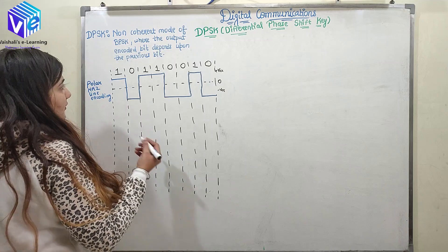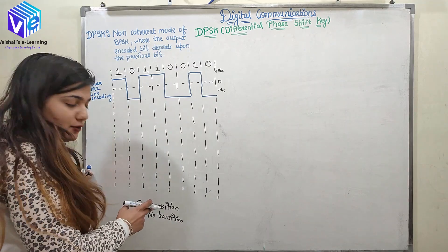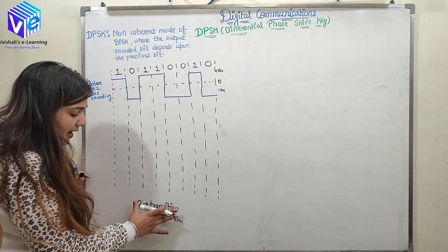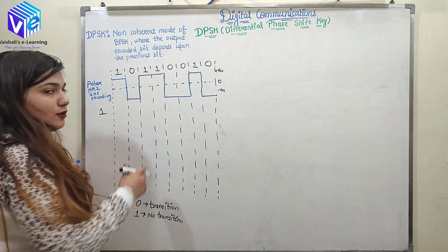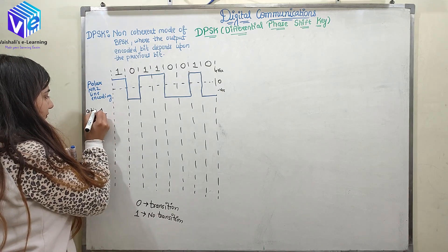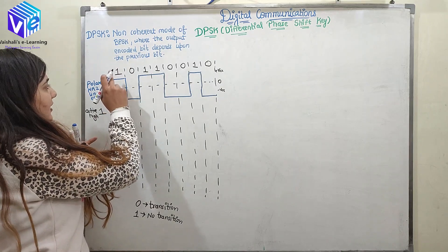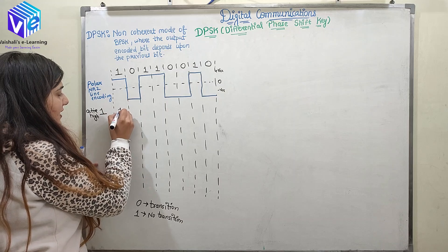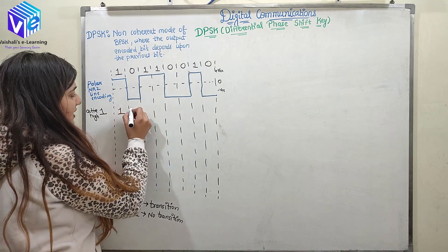The basic rule behind DPSK is: when we have 0, there is a transition, and if the previous bit is 1, there is no transition. We can have active high or active low as the first bit — I'll discuss both. Taking active high first: my initial bit is 1. Since the previous bit is 1, there is no transition, so 1 continues as it is. The next bit is 0, which means transition — so 1 transitions to 0.